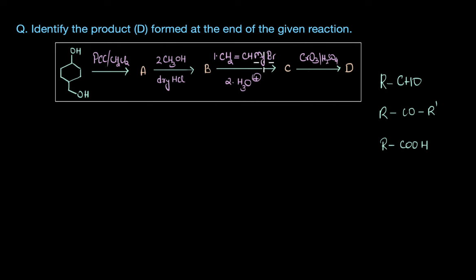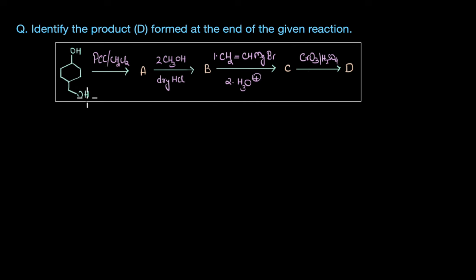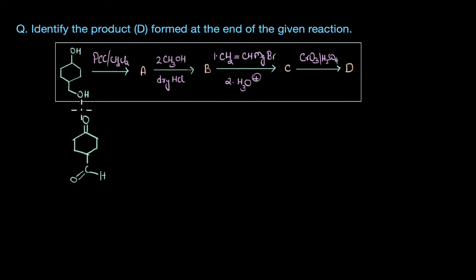Let's begin with a simple conversion question. We need to identify the structure of product D that is formed at the end of this reaction. The starting compound has two hydroxy groups — a primary alcohol CH2OH and a secondary alcohol CHOH. When we treat this compound with a mild oxidizing agent like PCC, it gets oxidized to the corresponding carbonyl compounds: ketone and aldehyde. So product A has the secondary alcohol oxidized to a keto group and the primary alcohol oxidized to an aldehyde group (CHO).